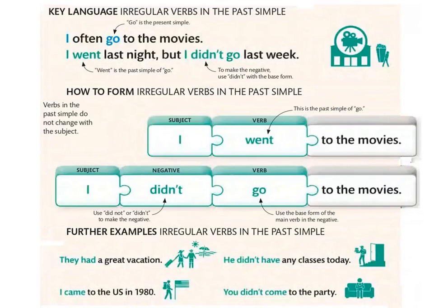More examples with irregular verbs: They had a great vacation — 'had' is the past of 'have'. I came to the US in 1980 — 'came' is the past of 'come'. He didn't have any classes today. You didn't come to the party — ما جيتش للحفلة. So: have → had, come → came.